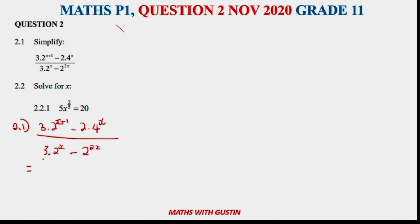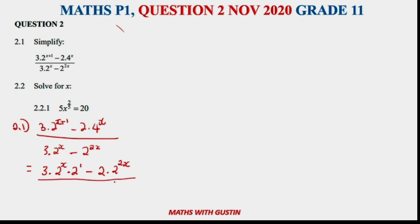Please make sure when you've got a plus or minus sign, always break the exponent apart. We have 3 times 2 to the power of x times 2 to the power of 1, minus 2 times 4 to the power of x. The 4 can also be written as 2 squared, giving 2 to the power of 2x, all over 3 times 2 to the power of x, minus 2 to the power of 2x.